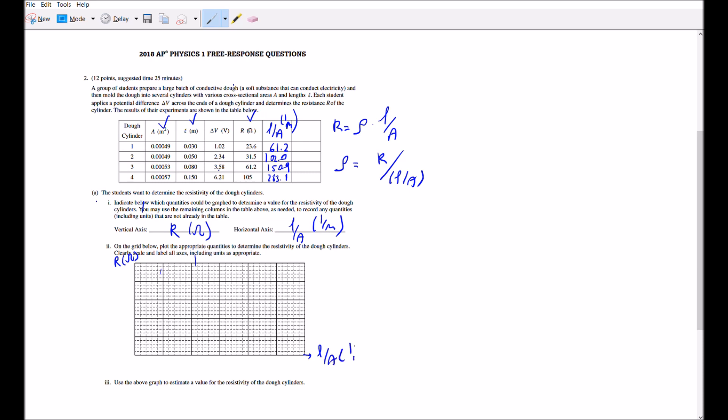Now it's asking you to scale the graph. Look at the minimum number for L over A, which is 61, and the highest is 263. You have six sections, so I would go from 0 and increase by 50 up to 300.